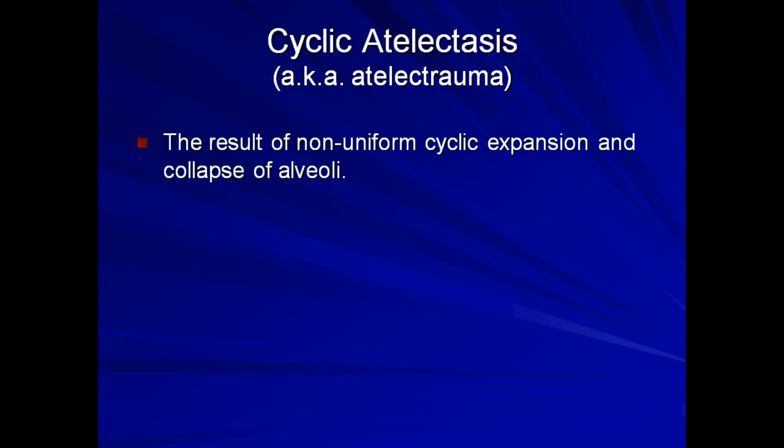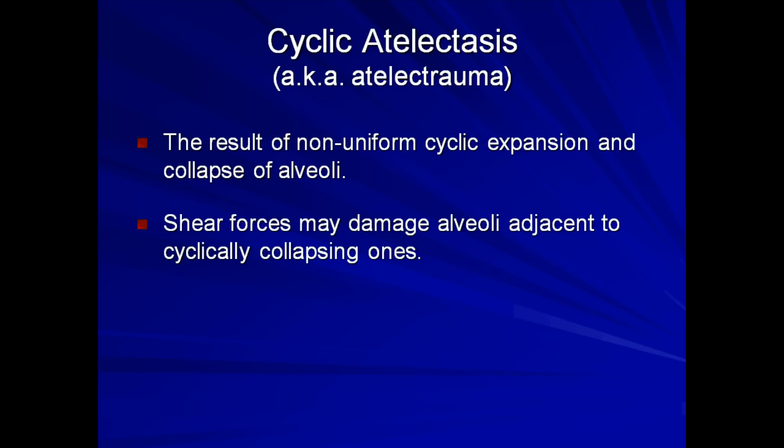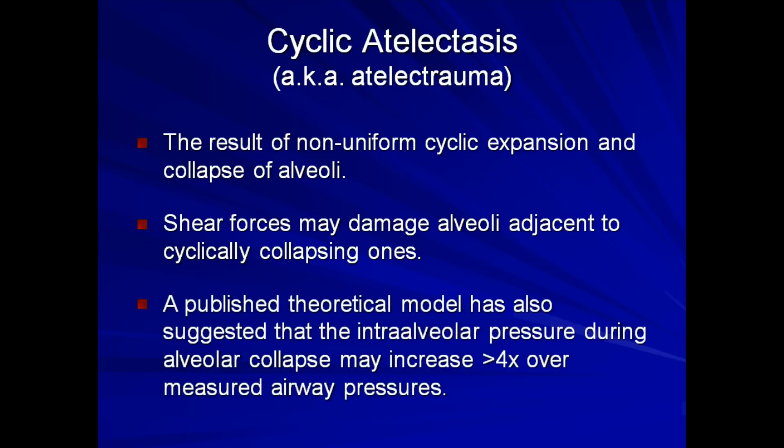The final class of ventilator-associated lung injury is cyclic atelectasis. This somewhat unconfirmed form of lung injury is thought to be the result of non-uniform cyclic expansion and collapse of alveoli, where shear forces may damage alveoli adjacent to cyclically collapsing ones. In addition, a published theoretical model has also suggested that the intra-alveolar pressure during alveolar collapse may increase as much as 4 times over the measured airway pressures. This has not been experimentally confirmed, however, and the overall importance or even existence of atelectrauma remains a little unclear.